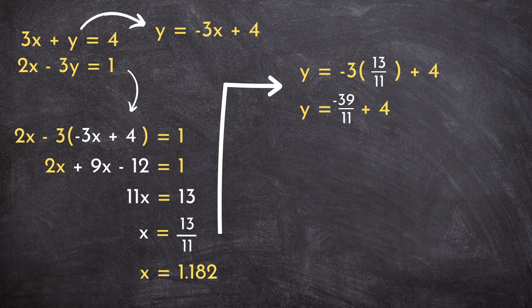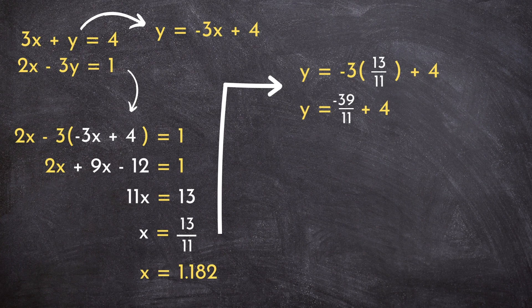We can multiply our negative 3 by the numerator of 13 to get negative 39 over 11. And remember, when you're adding fractions or adding a fraction to a whole number, we need a common denominator.